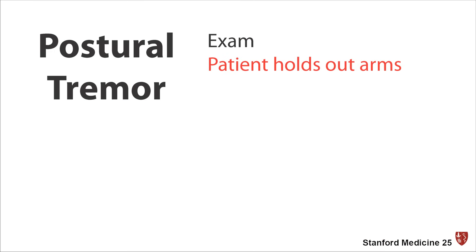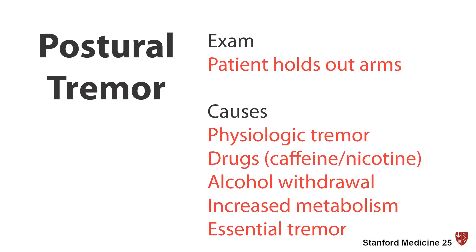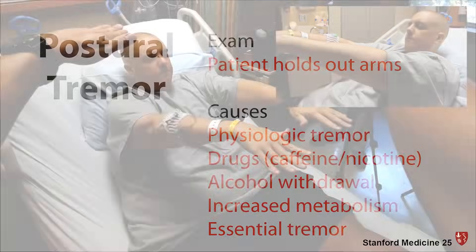The postural tremor is easy to find by asking your patient to hold their arms out. Causes include a normal physiologic tremor, which can be increased in certain states such as sleep deprivation, too much caffeine or nicotine, alcohol withdrawal, increased metabolic states such as in hyperthyroidism, and essential tremor.